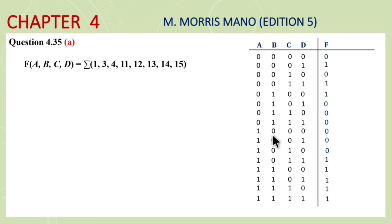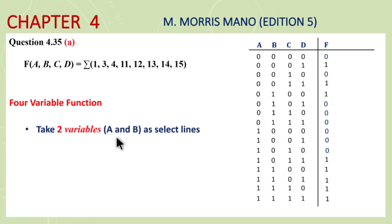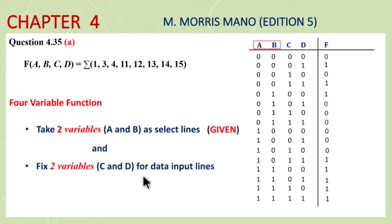This result is the multiplexer which we need to design. There is a 4-variable function and the given condition is that 2 variables A and B are select lines, and the remaining two variables C and D are the data lines. If you look at this, there are four input combinations — these are common input lines.